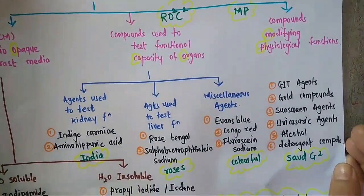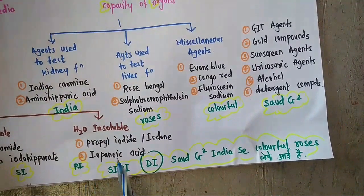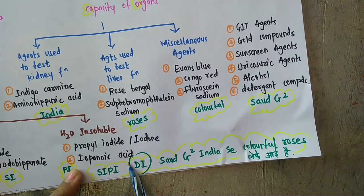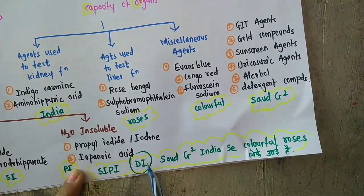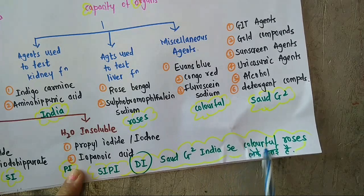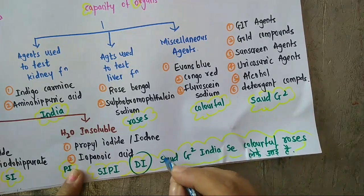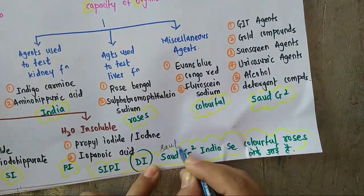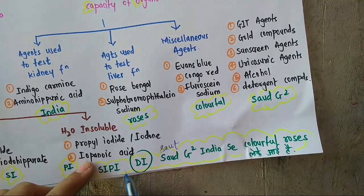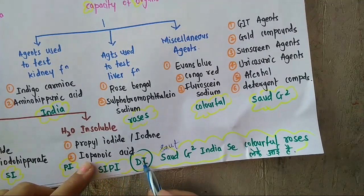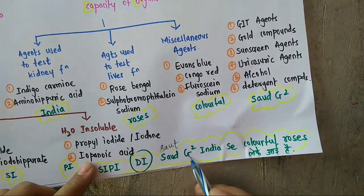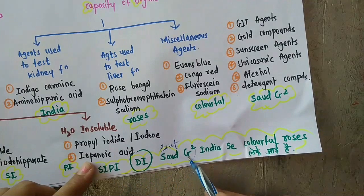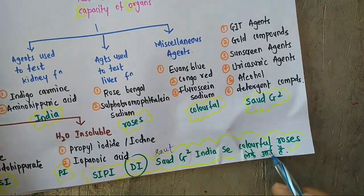To remember the examples, the trick is a Punjabi statement: 'Sippi di saudji, India se colorful roses leke aayi hai.' This mnemonic will help distribute the examples across the classification.